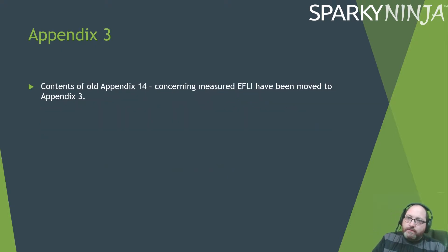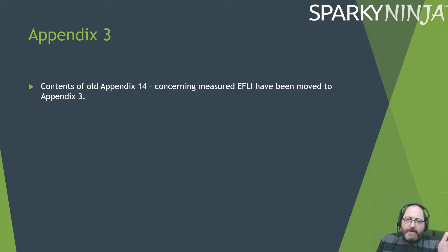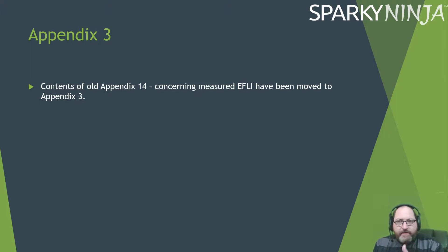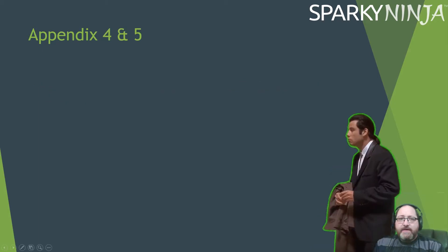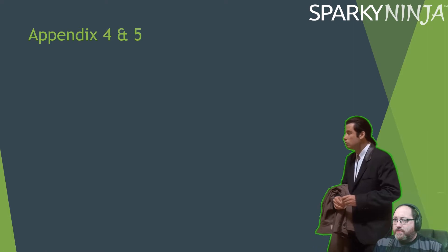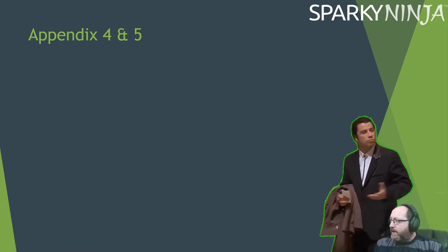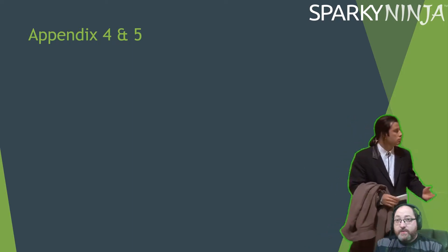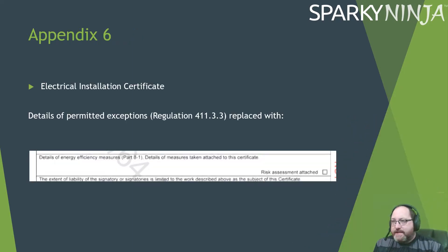Appendix three: they've taken the contents of the old appendix 14 — the calculation of the maximum measured earth fault loop — and put that into appendix three. It's still in appendix 14 but they've just taken away the earth fault loop part. Appendix four and five, surprisingly, there is no change at all. I was expecting a lot of changes but there are only minor things — nothing significant at all.